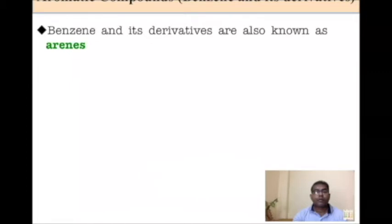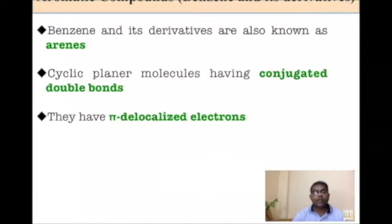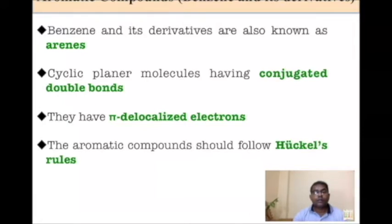Now, what are aromatic compounds? Aromatic compounds are also known as arenes and they are cyclic compounds or molecules having conjugated double bonds. They have pi-delocalized electrons and they follow Hückel's rule.